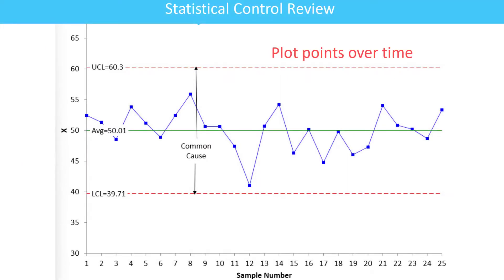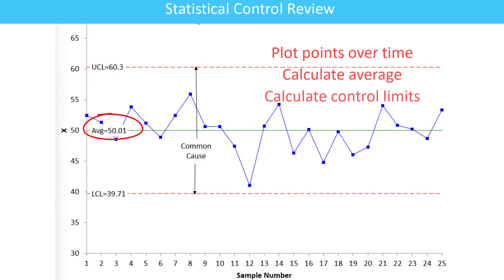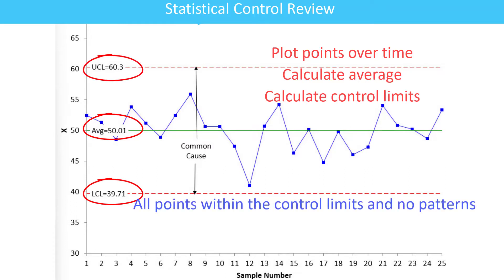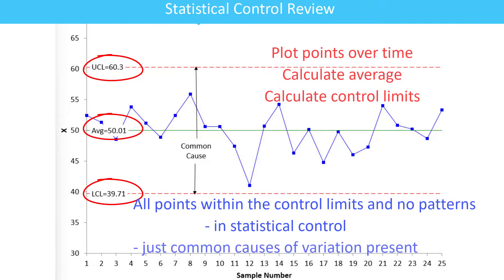So on a control chart, you're going to plot points over time and calculate an average. Then you're going to calculate control limits and add the average and control limits to the chart. As long as there are no points beyond the control limits and you don't have any patterns, your process is in control.